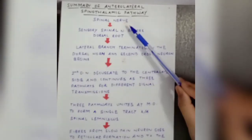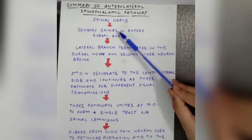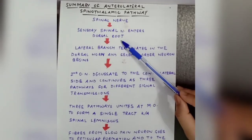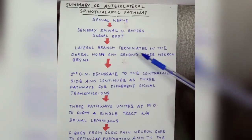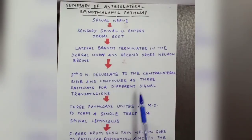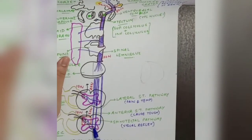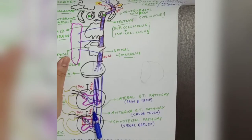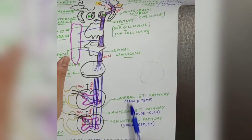Now, coming to the summary of the anterolateral spinothalamic pathway: the sensory spinal nerve enters through the dorsal root. The lateral branch terminates in the dorsal horn and the second order neuron begins. The second order neuron decussates to the contralateral side and continues as three pathways for different signal transmissions: the lateral spinothalamic pathway, the anterior spinothalamic pathway, and the spinotectal pathway.